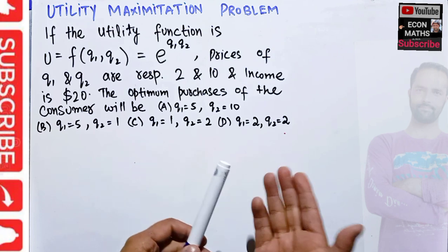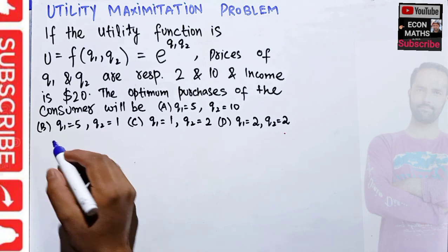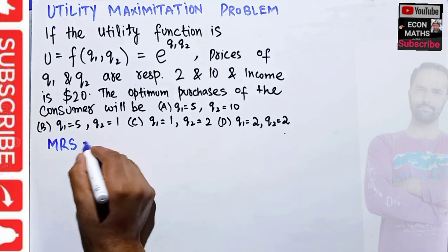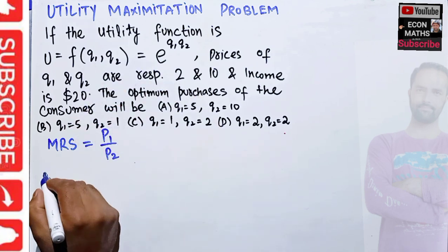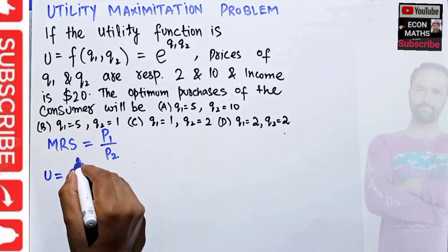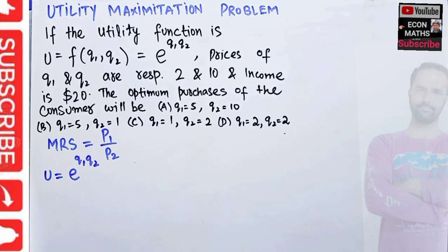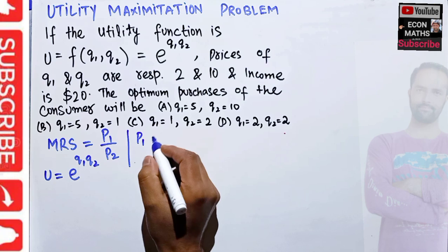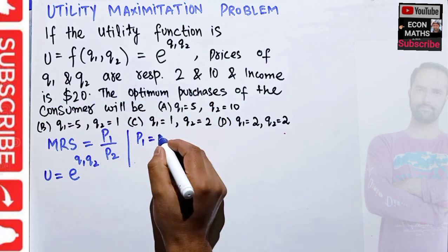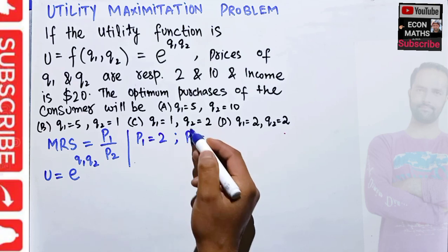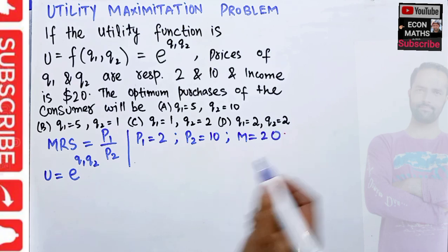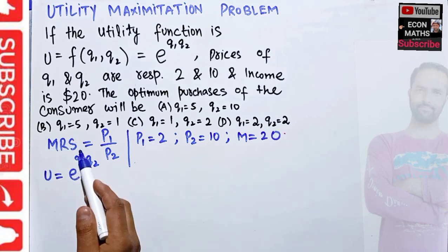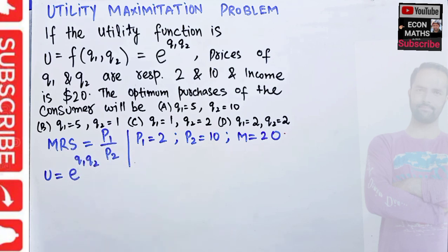The utility maximization condition is that the marginal rate of substitution should be equal to the ratio of the prices, that is p1 upon p2. So let's write what we have been given: the utility u = e^(q1 * q2), p1 = 2, p2 = 10, and income = $20. The utility maximization condition is that MRS between two goods should equal the ratio of their prices.